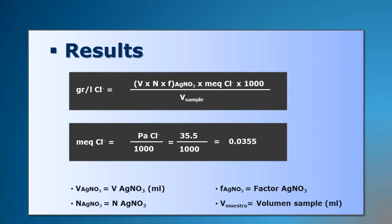Results. To calculate the concentration of chloride ions present in the water sample in grams per liter, we should apply the following formulas.